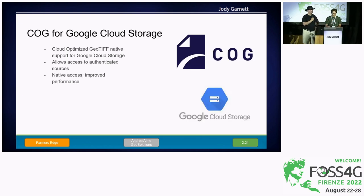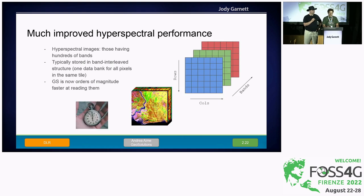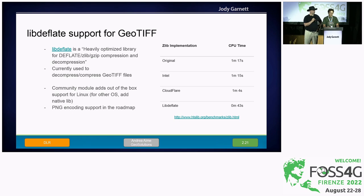We also have new native support for Google Cloud Storage in the COG module — the Cloud Optimized GeoTIFF module. We have improved performance a lot when reading hyperspectral images, that is images which have hundreds of bands typically organized in a band-interleaved fashion. We've also added support for libdeflate in GeoTIFF. We always supported deflate compression in both input and output, but this library allows it to run faster.